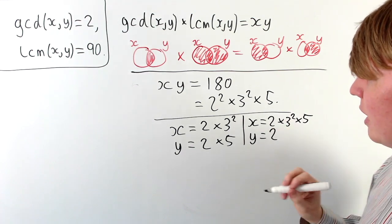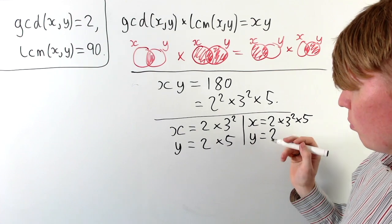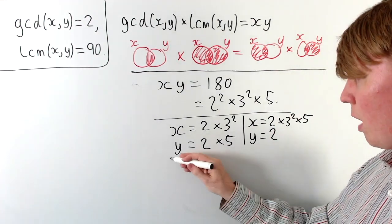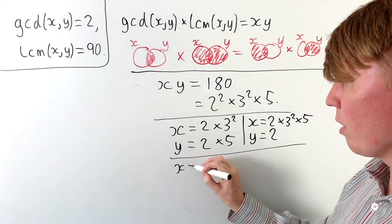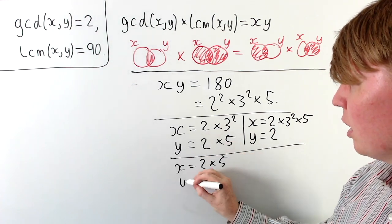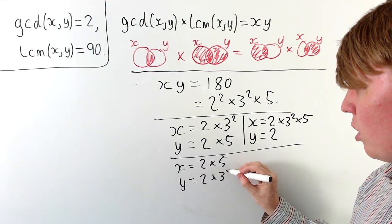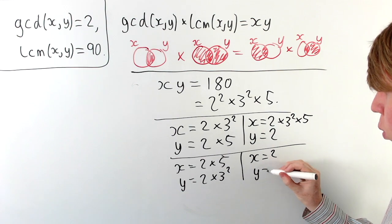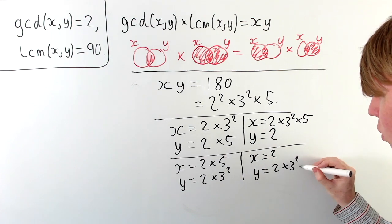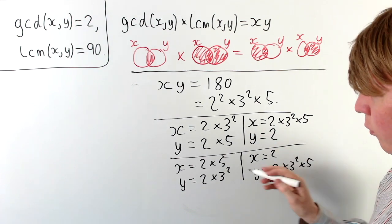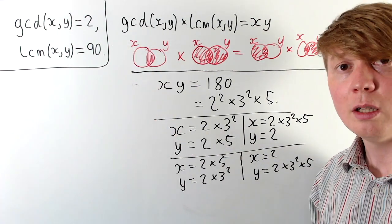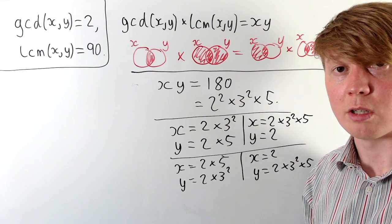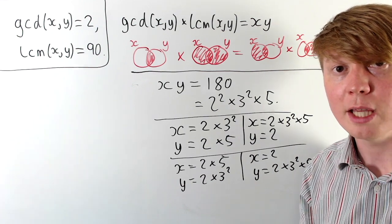If x is 2 times 3 squared times 5, then y is just 2. We've now covered all possibilities. We could also swap x and y: x equals 2 times 5 and y equals 2 times 3 squared, or x equals 2 and y equals 2 times 3 squared times 5. So there are four solutions when considering ordered pairs, or just two solutions if you don't care about the order of x and y.